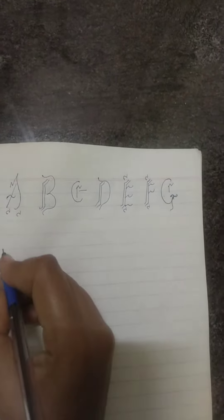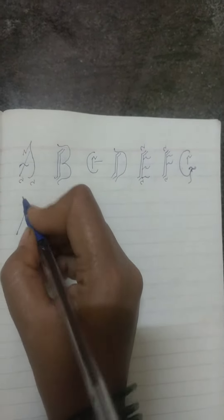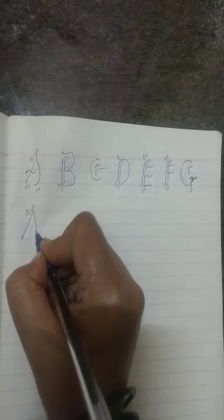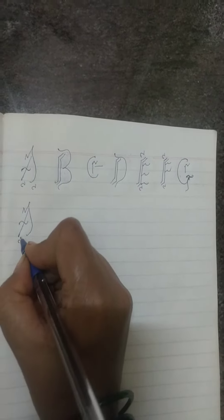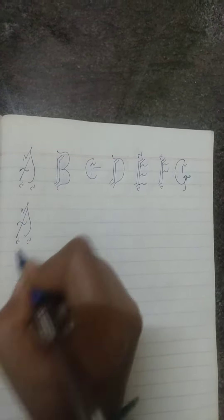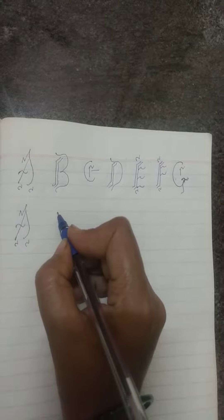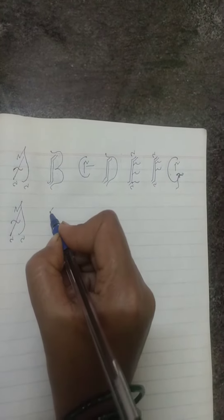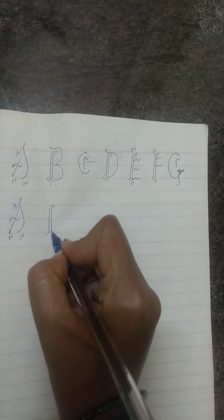This is slanting stroke, this is a stroke, this wave stroke, this is crown stroke. Next B — this is I stroke.